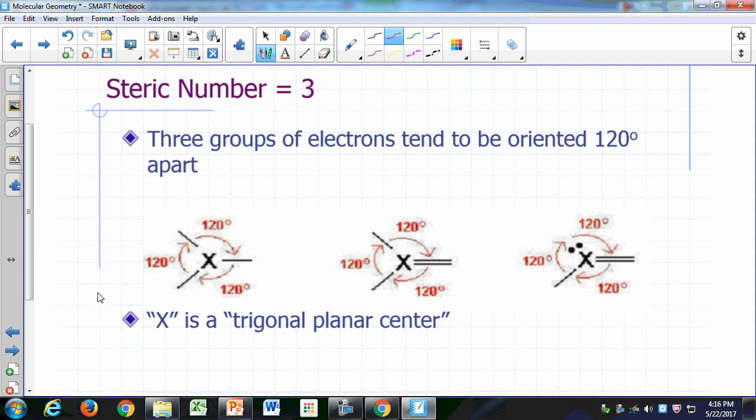If we have three groups of electrons sticking out of an atom, so let's say you have atom x here, there's three groups sticking out of it, the three groups will be as far away from each other as possible if they are oriented 120 degrees apart.